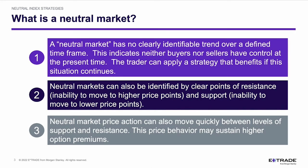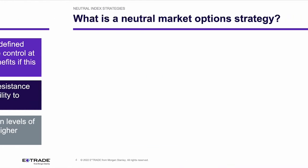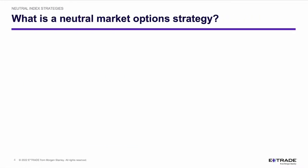Now we can talk about some strategies. There are a number of neutral index strategies — things like a covered call, a buy-write, certain types of cash secured puts, various spread trades, iron butterflies, diagonal spreads, and iron condors. These are all strategies that are either well suited for neutral markets or they can be adjusted for neutral markets.